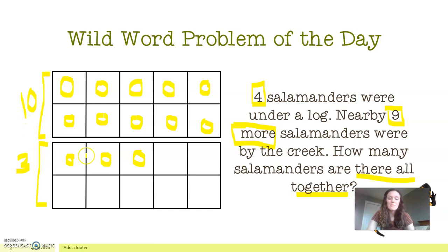Our equation for this would be: we started with four, then we found nine more, and that equals 13 salamanders. Great job, my wonderful friends!